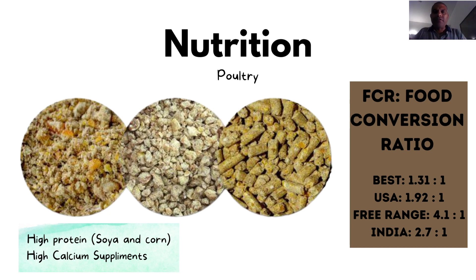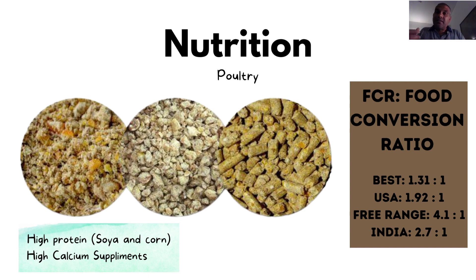Free range chickens are those not kept in large poultry farms and are allowed to go out and feed. These have an FCR of about 4.1 because they have longer lifespans and keep eating for a longer time - meaning four kilograms of feed to one kilogram of chicken. In Indian poultry farms the FCR is nearly about 2.7 to 1, so it takes almost three kilos of feed to produce one kilogram of chicken.